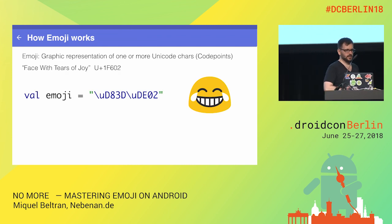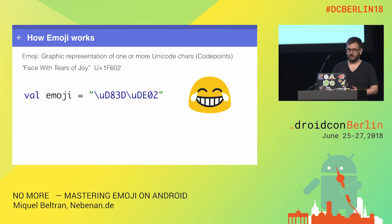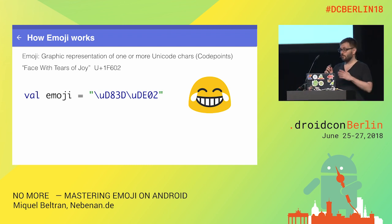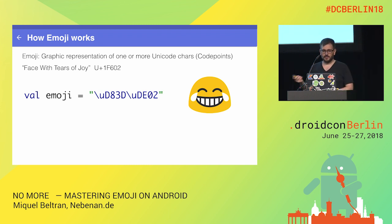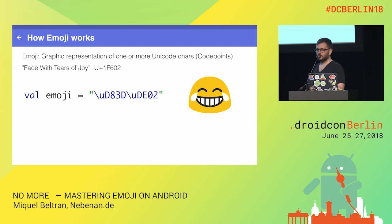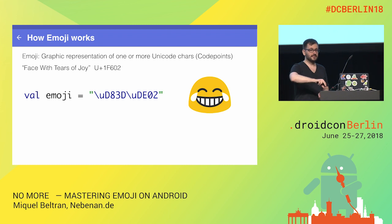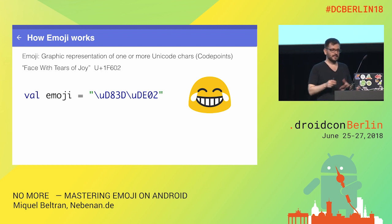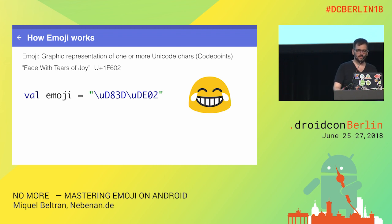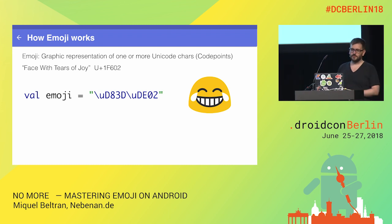Emoji are graphical representations of one or more Unicode code points. The face with tears of joy is Unicode 1F602. If you go to Emojipedia, search for this emoji, copy it, and paste it into Android Studio inside a string, you will see the UTF-16 representation. When you set this text into a TextView, the emoji will be rendered. But you can have more complex emoji than that.